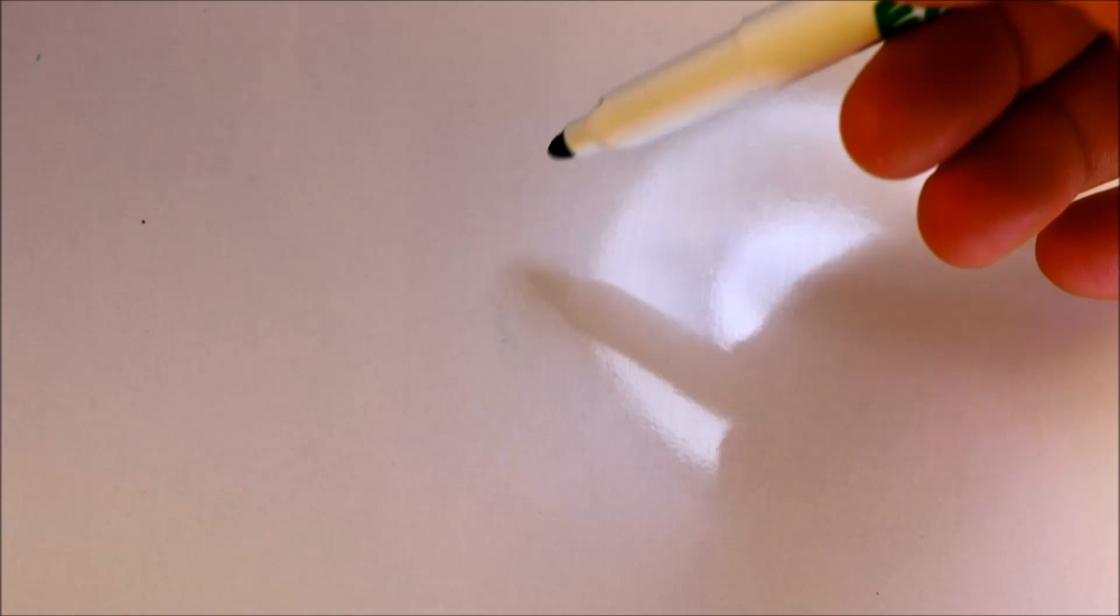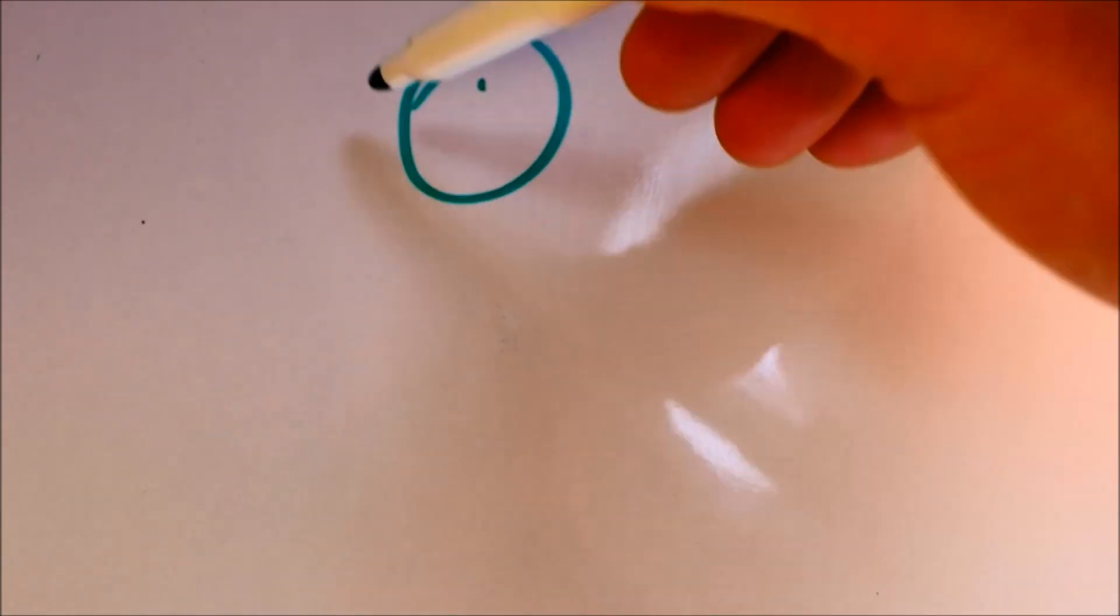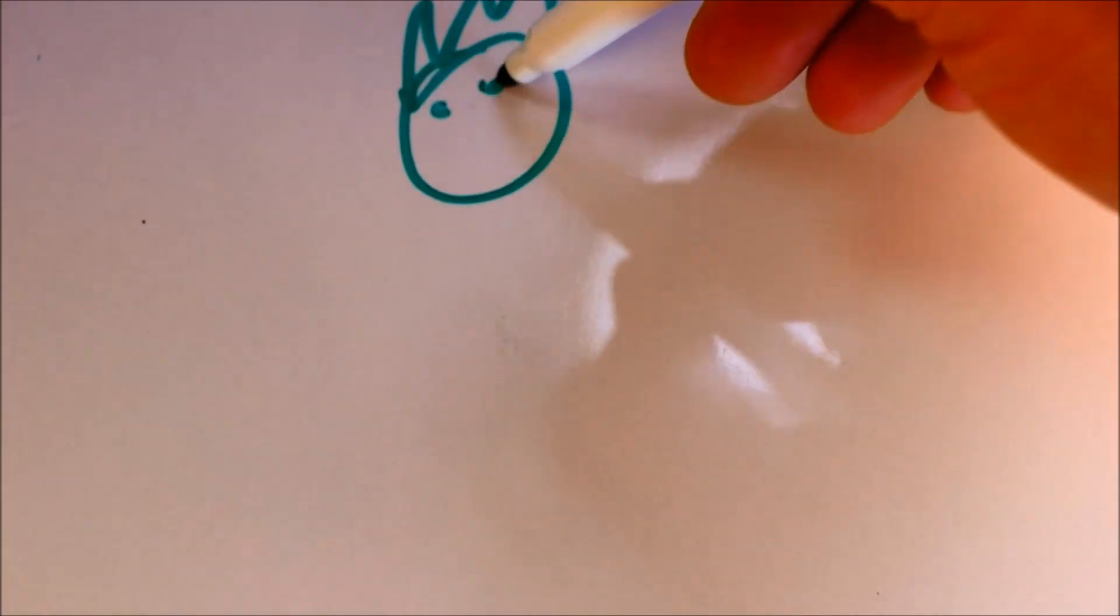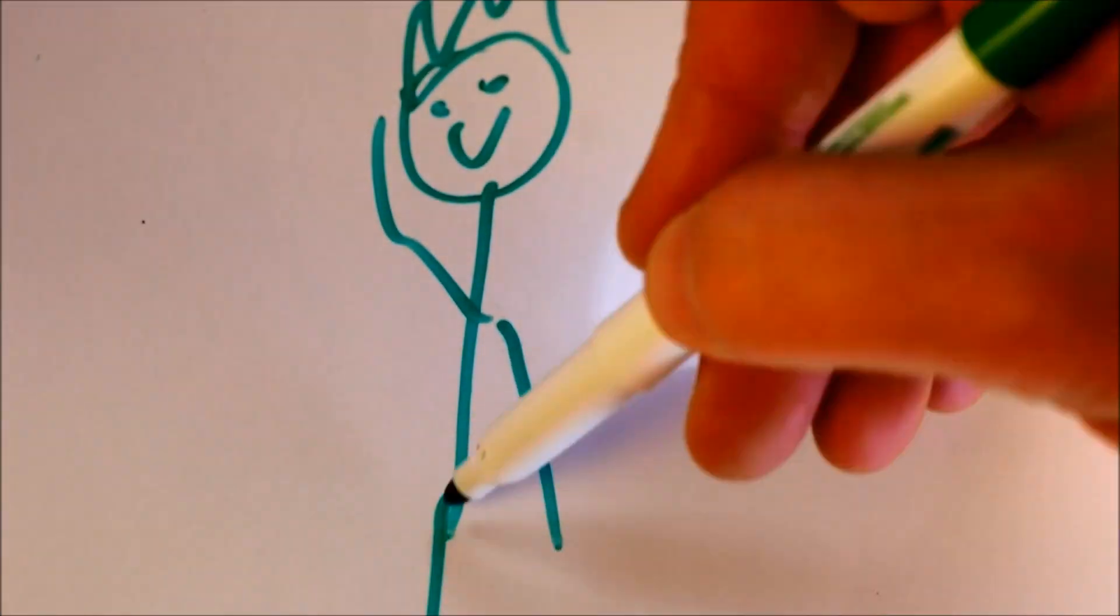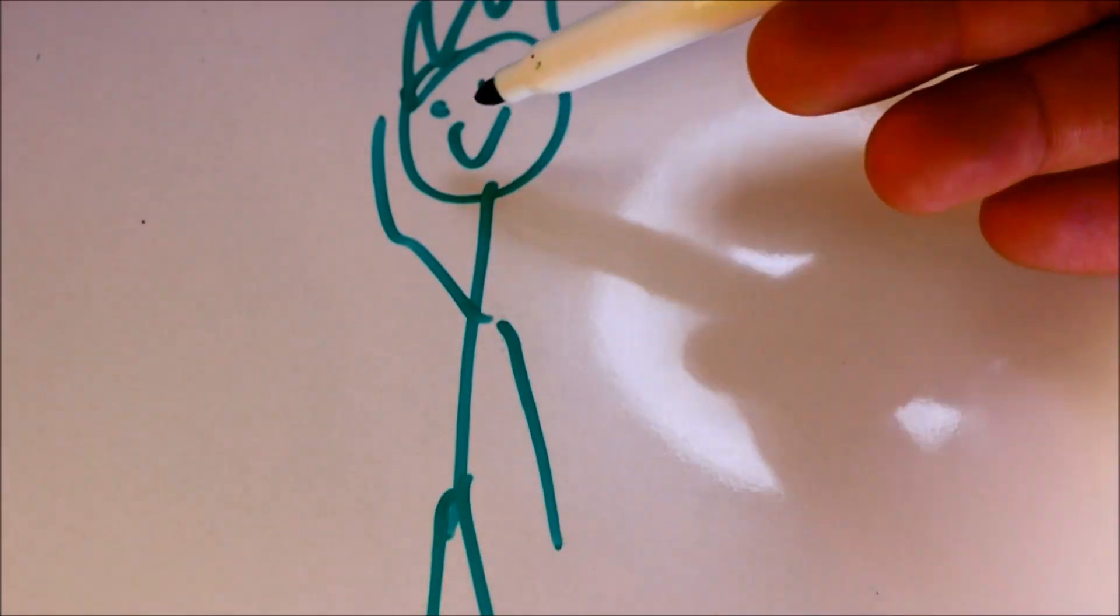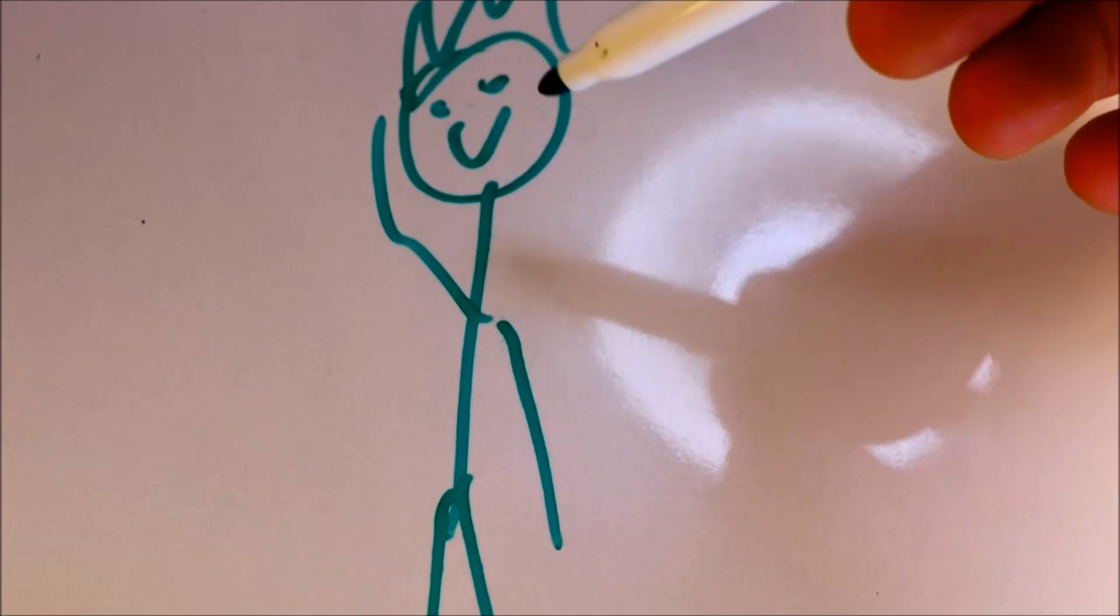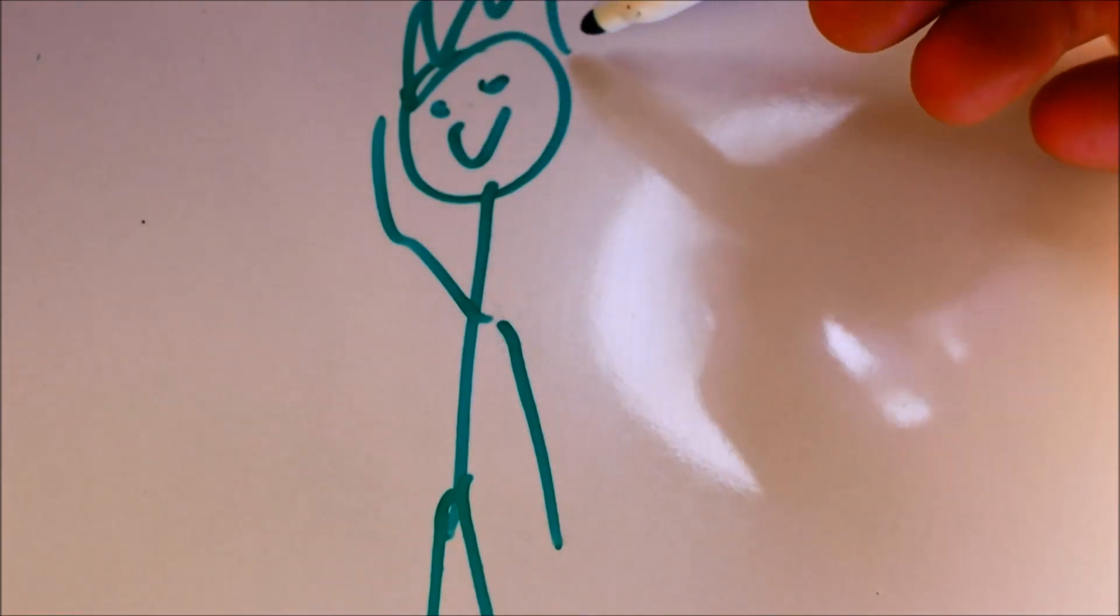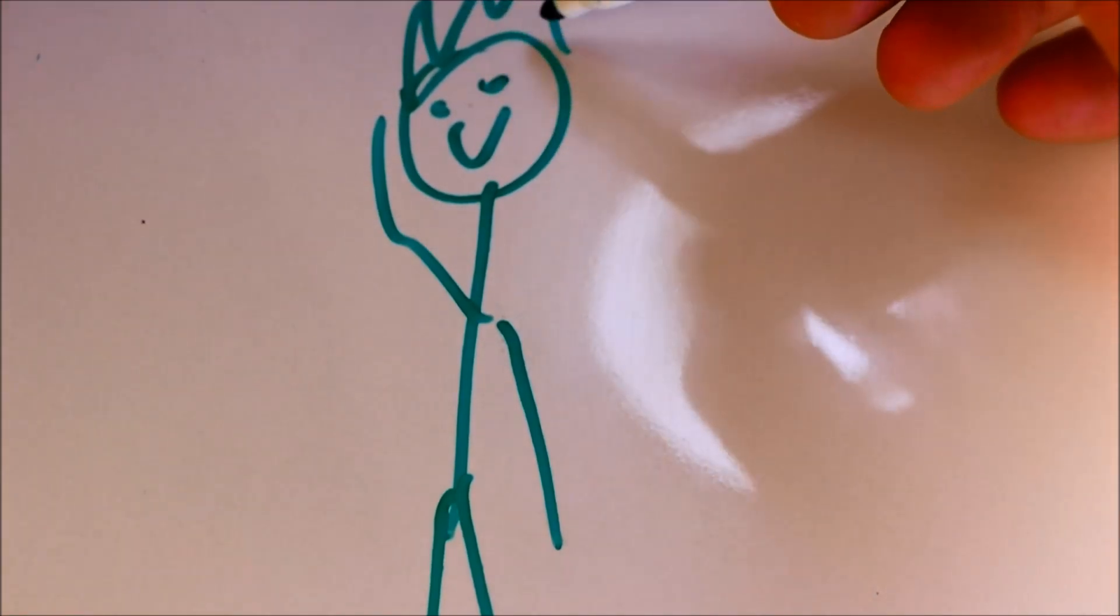...you will see two images overlaying each other. You'll see your primary image of your friend and when it's in focus this is what it will look like. If it's out of focus it will look more like this.